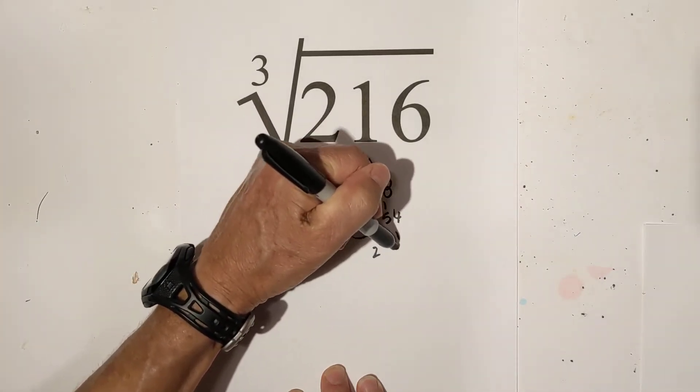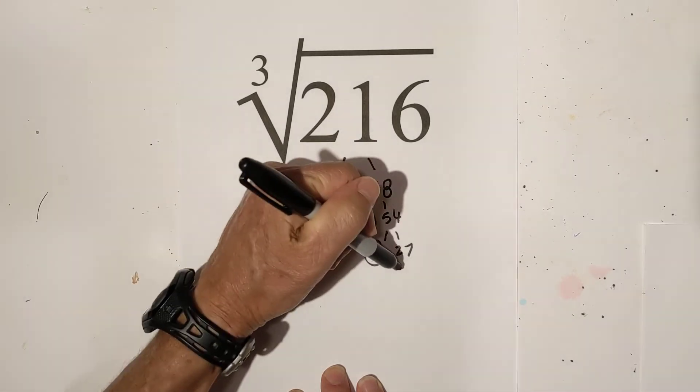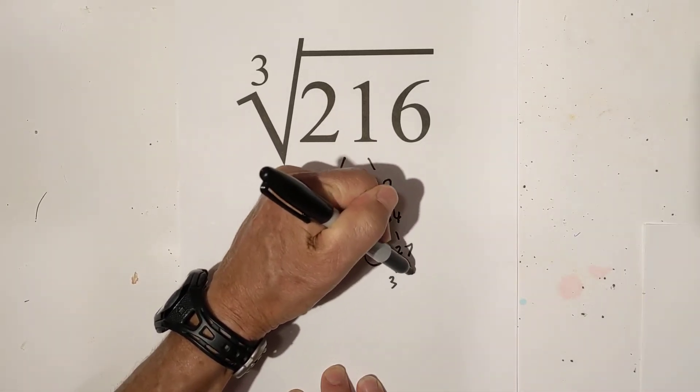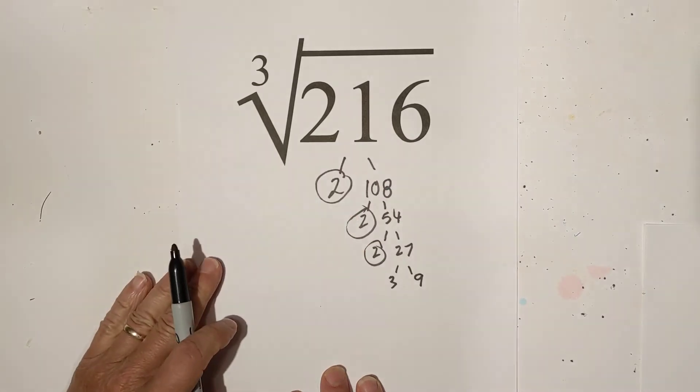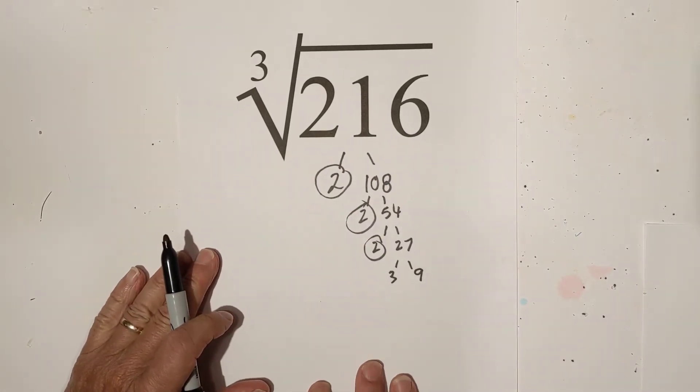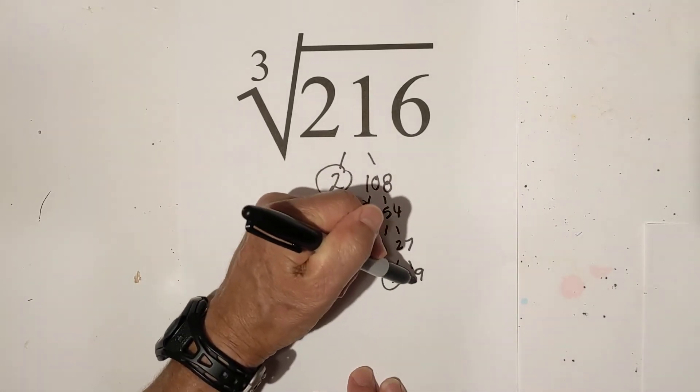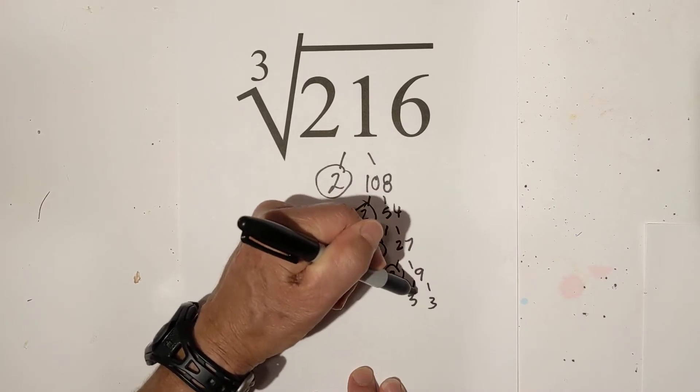And then 2 times 27 and we'll do this until we get down to just prime numbers. 3 times 9 is 27, circle the 3 and then 3 times 3. So now we're down to all prime numbers.